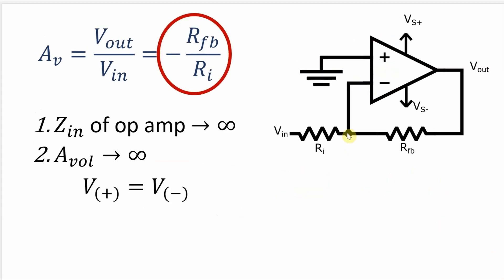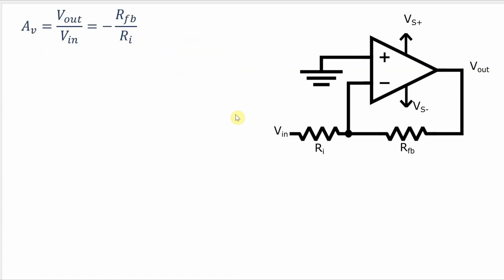So keeping all this in mind how do we get a voltage gain equation of negative RFB over RI. To start with if the voltage at the inverting pin is the same as the voltage at the non-inverting pin and the non-inverting pin is tied to ground then the inverting pin must also be tied to ground.